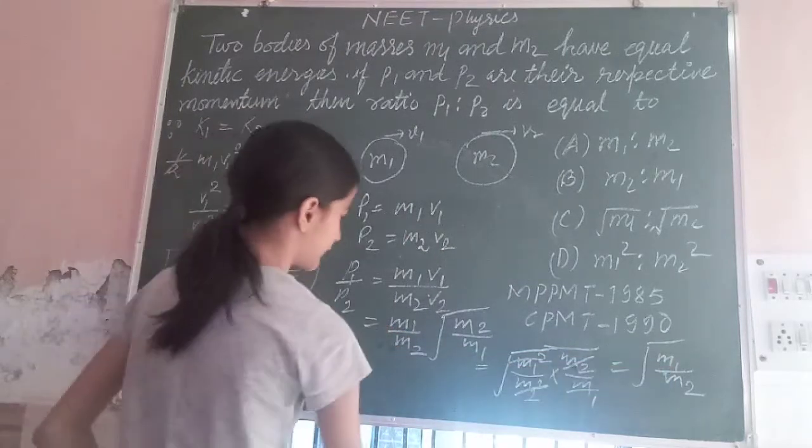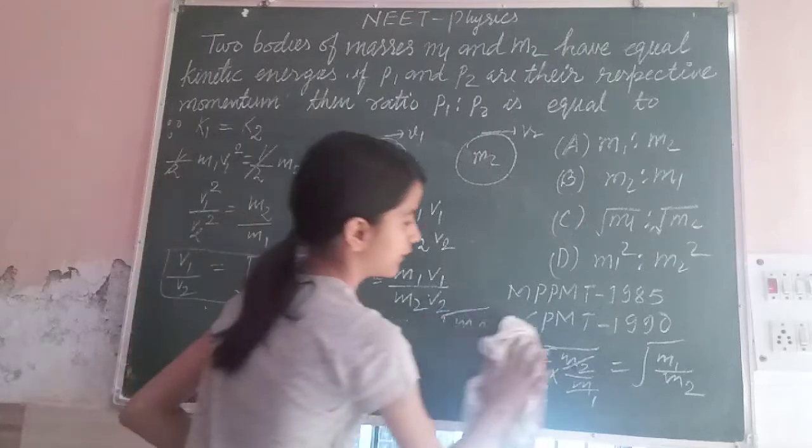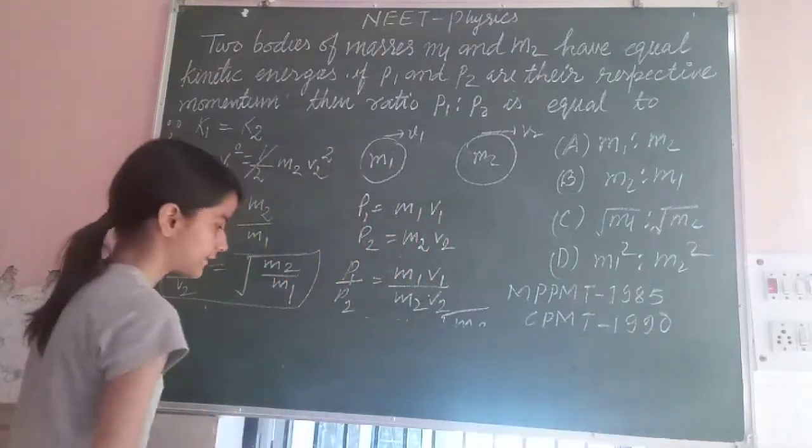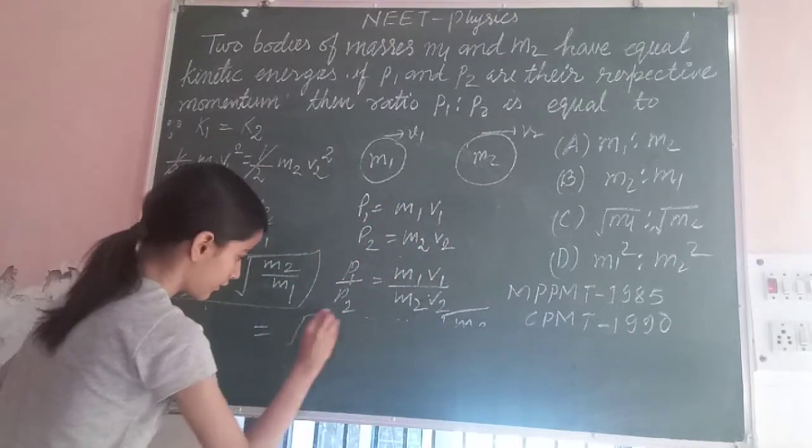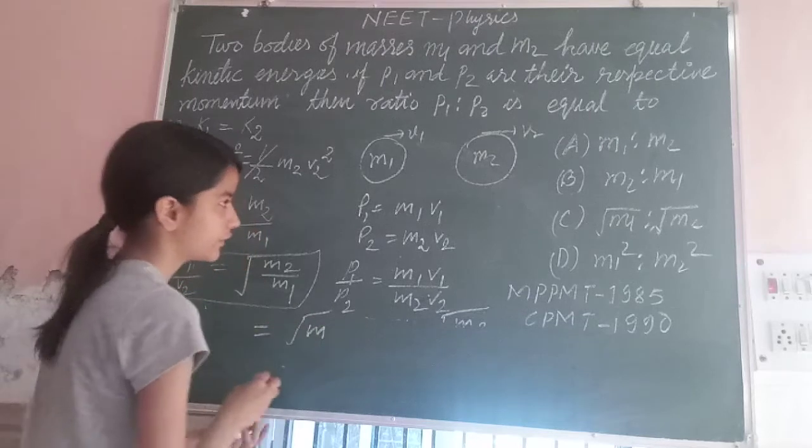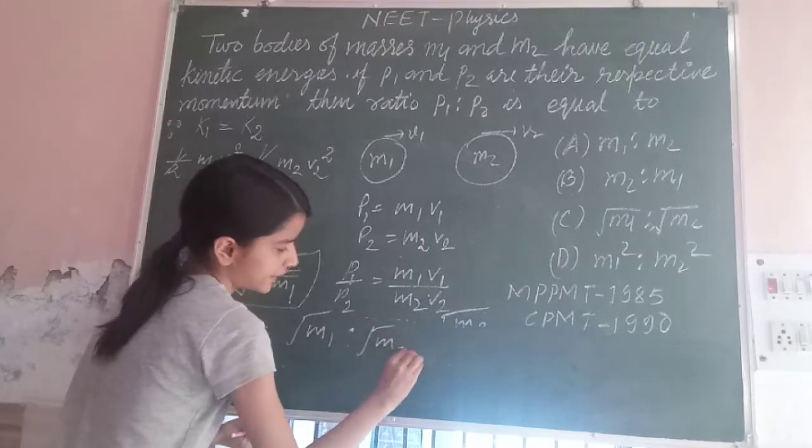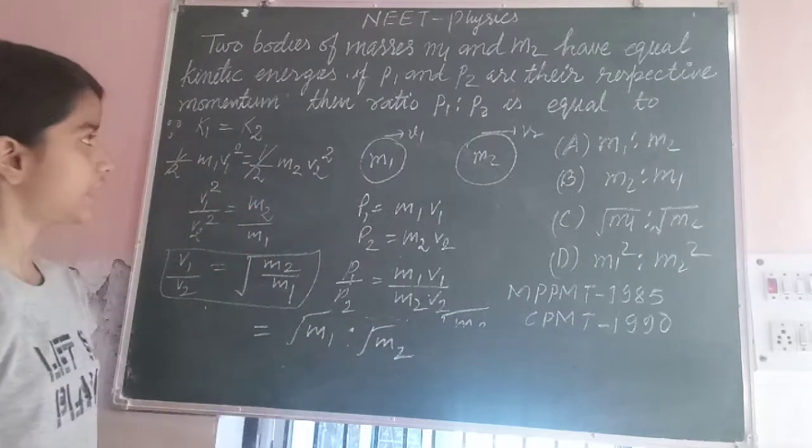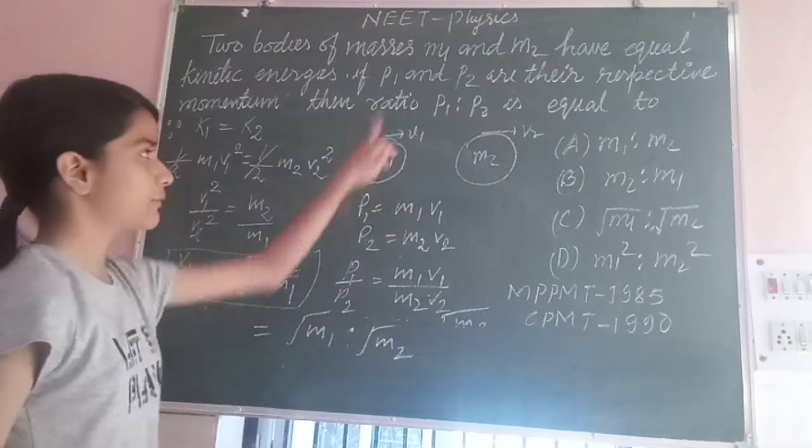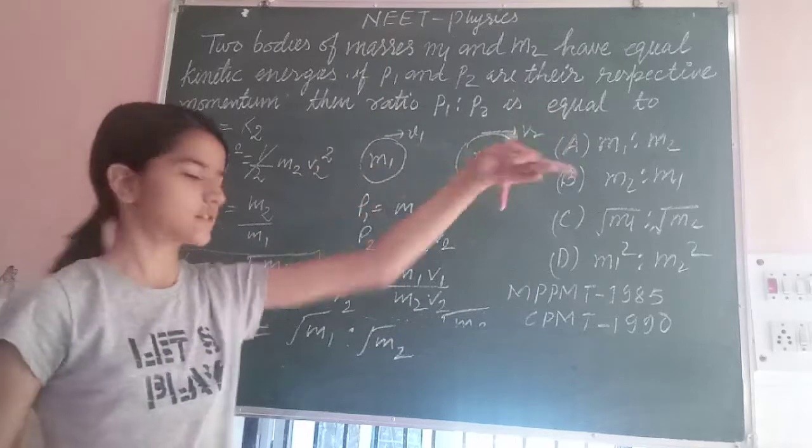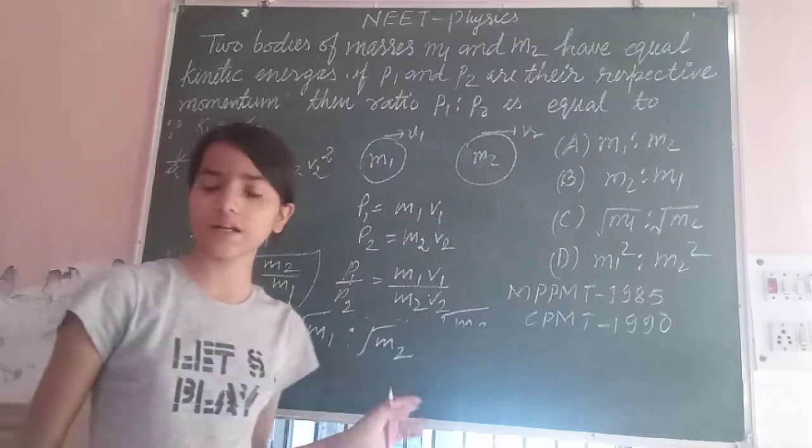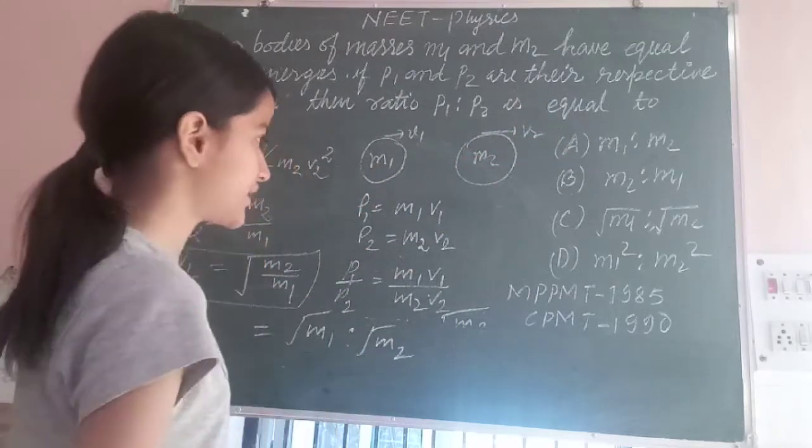We will get under root M1 upon M2. This is under root M1 upon M2. Now, we will write in this ratio form, that is under root M1 ratio M2. Therefore, the answer is, therefore, P1 ratio P2 is equal to under root M1 ratio M2 which is an option.